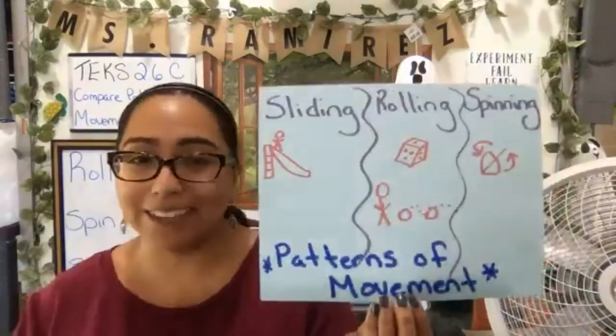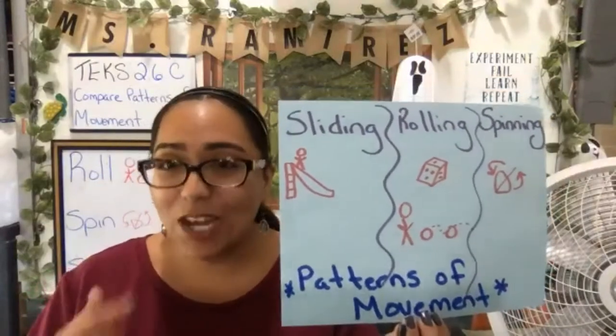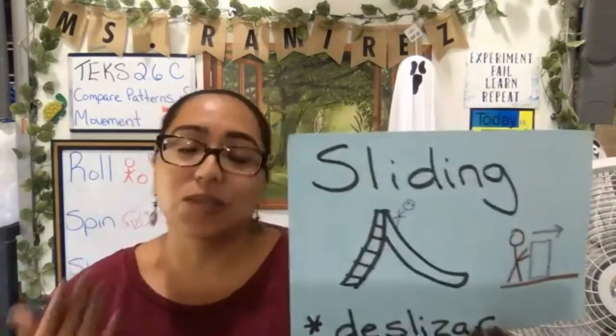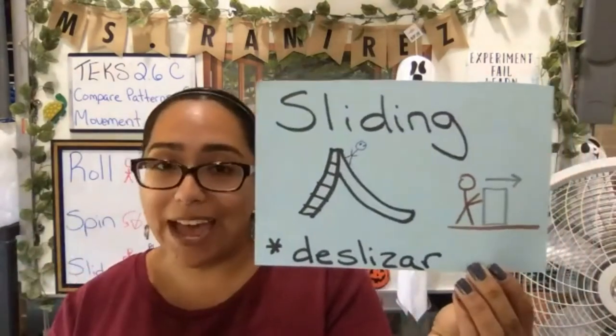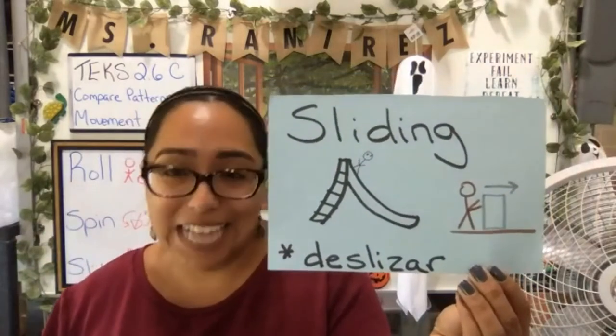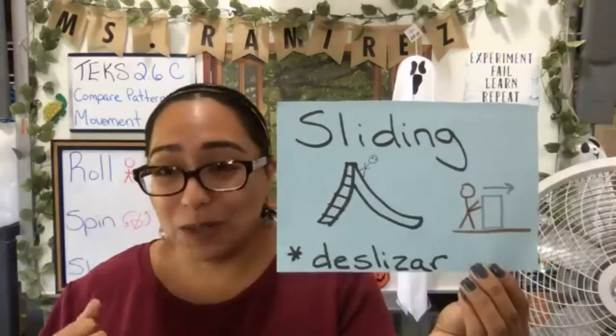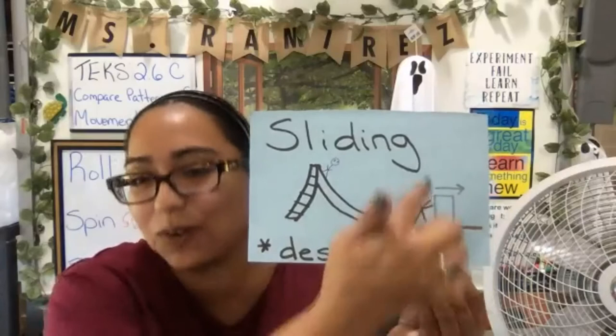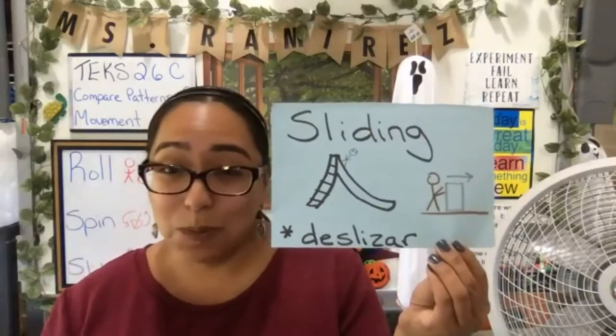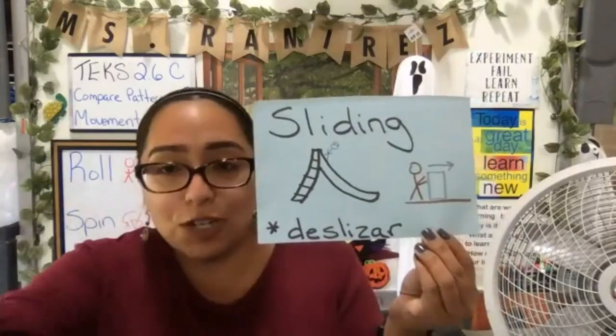Now Ms. Ramirez is going to tell you different ways that objects move. Hello, my name is Ms. Ramirez, and in this segment we're going to be learning about the different patterns of movement — sliding, rolling, and spinning. Let's talk about the motion of sliding first. Sliding is when an object moves across a surface and ends up in a new place. Think of some examples: playing on a playground slide, or pushing a heavy box across the floor — that is a sliding motion.